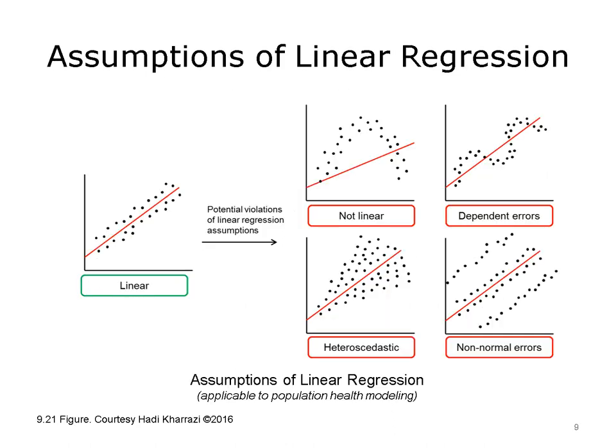These diagrams show the various assumptions needed to develop a linear regression model. As depicted on the left side of the diagram, an ideal scatter plot of a given outcome and one predictor should follow a linear format. Any of the distributions depicted in the scatter plots on the right side may violate the assumptions of linear regression models. These potential violations could be caused by non-linearity of the data, dependence of errors, heteroscedasticity of the data, and non-normal errors. Note that these distributions often do occur in population health analytics and analysts should be aware of potential threats to their models.